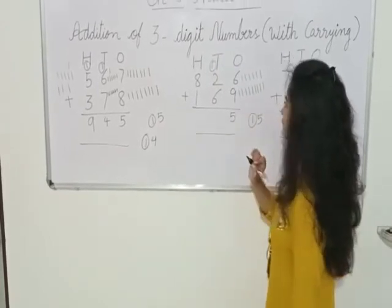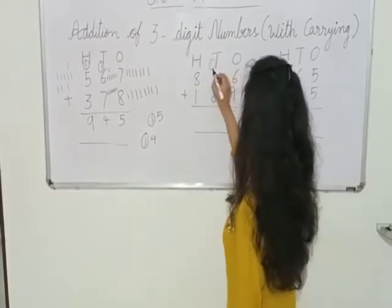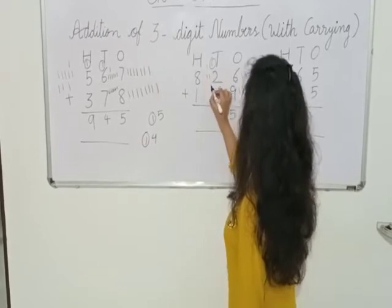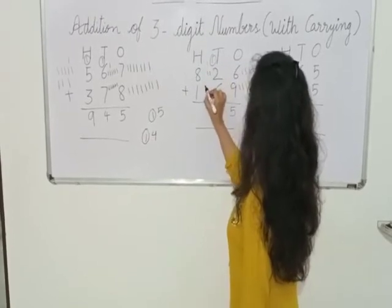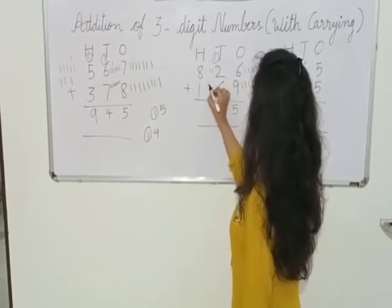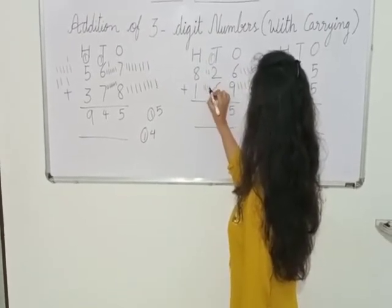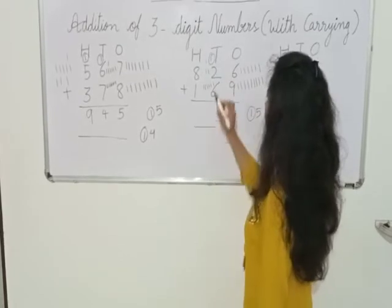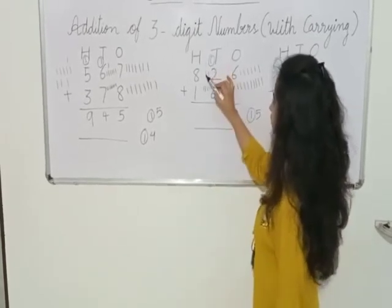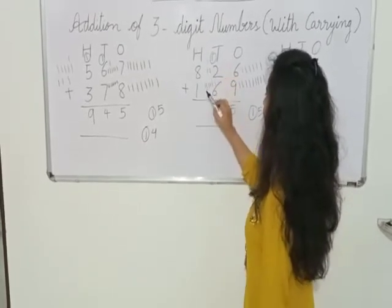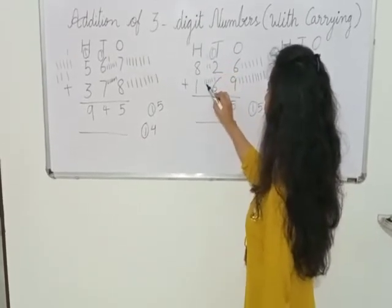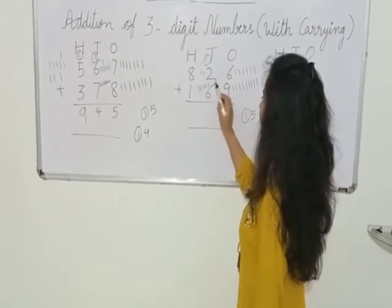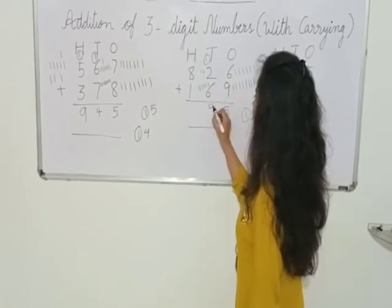Now for the 10's place: here is 1 carried, we draw 1 line. Here is 2, we draw 2 lines. Here is 6, we draw 6 lines: 1, 2, 3, 4, 5, 6. Now let's count: 1, 2, 3, 4, 5, 6, 7, 8, 9. So we will write down 9 here.